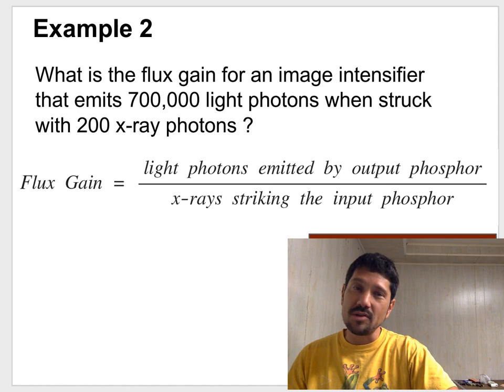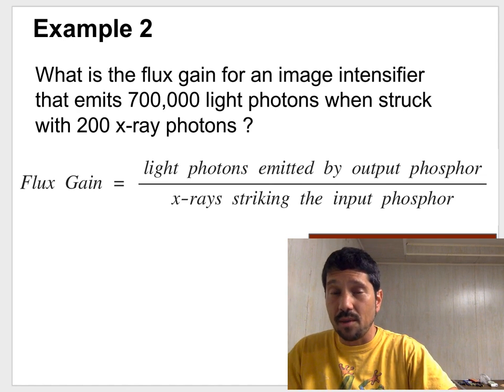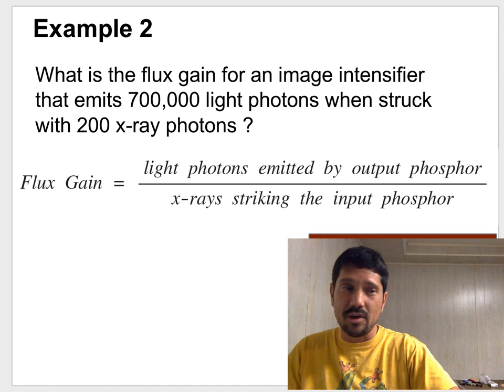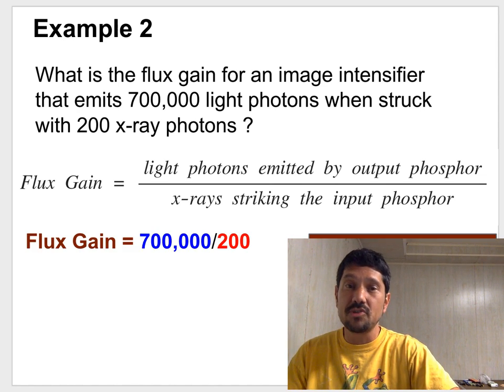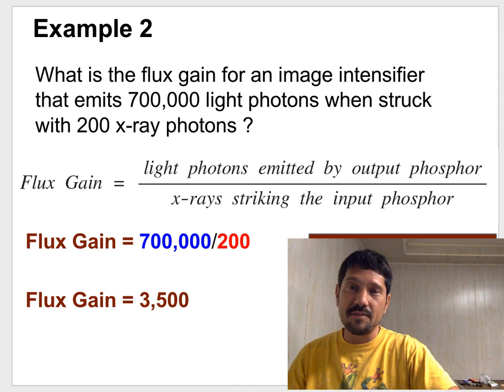So, what goes out over what goes in, the big number over the small number. This is also going to be a number larger than 1. So flux gain is 700,000 over 200, or 3,500.